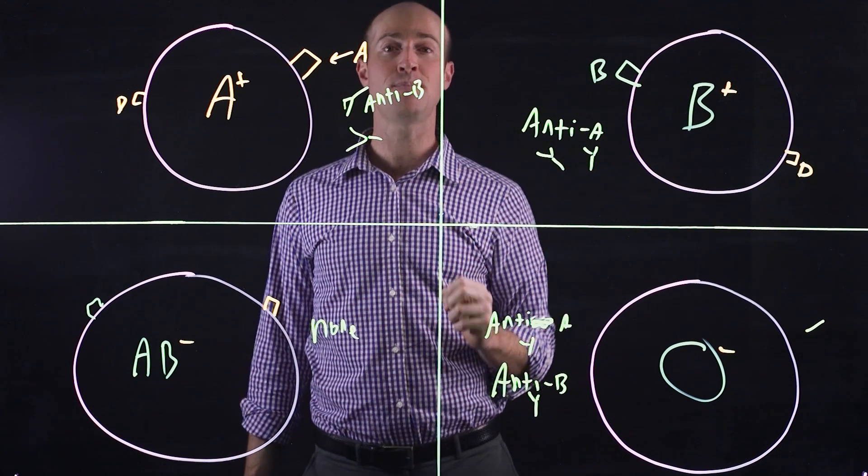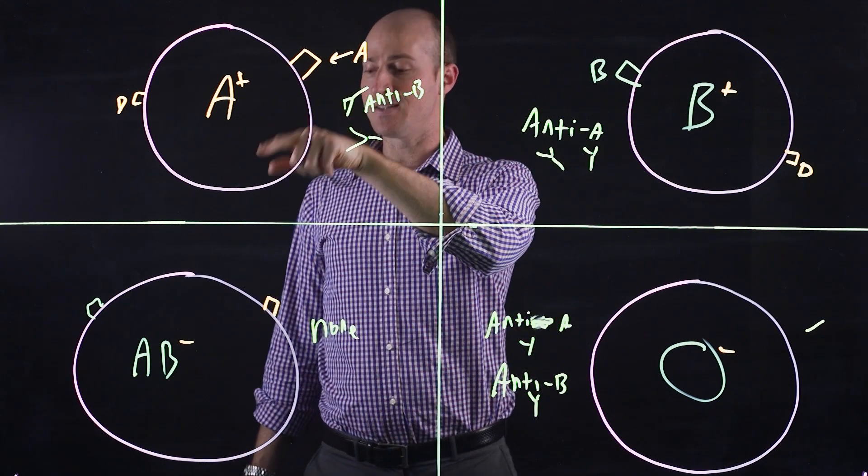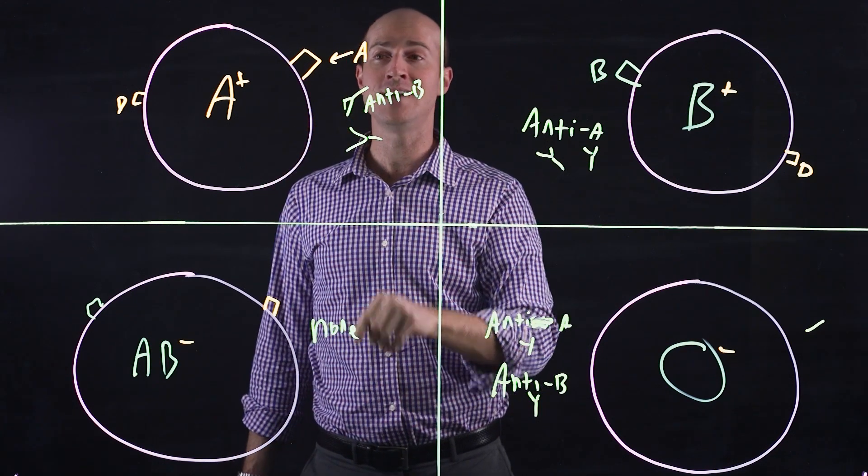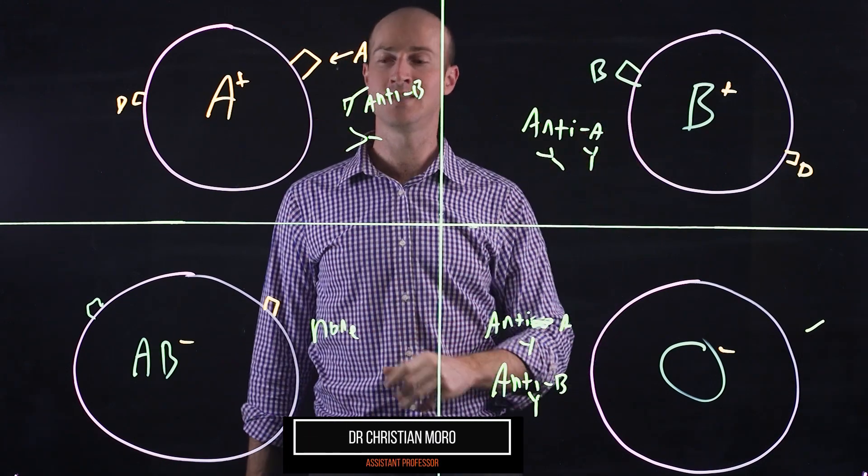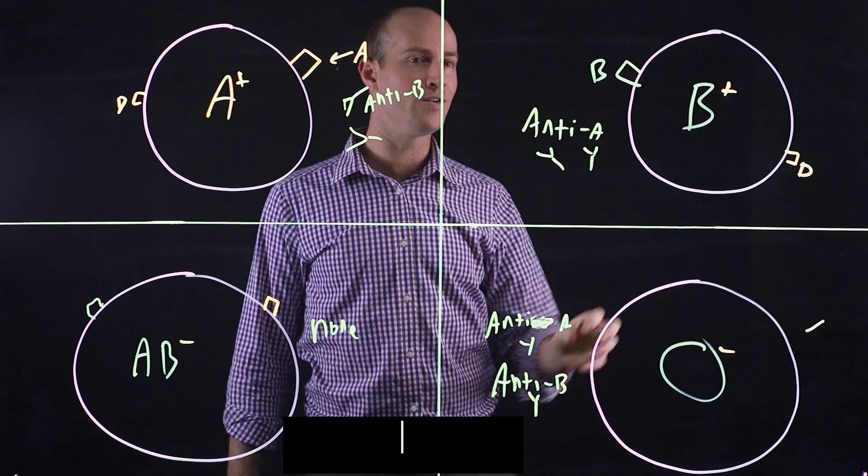AB is a universal recipient for the blood types because it doesn't have any anti-A or anti-B. A can go into that system. B can go into that system. O can go into that system. Universal recipient. Universal donor.